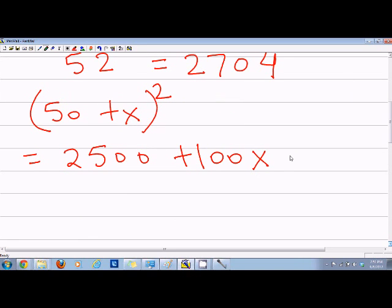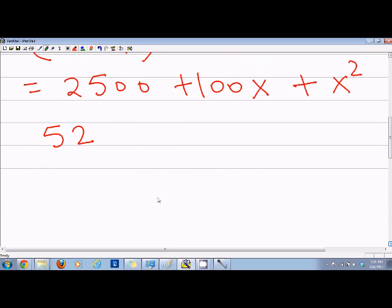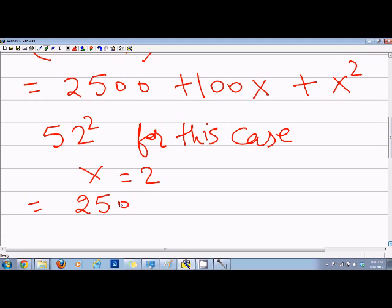and plus x square. So you can see that if I am taking a square of 52, then x in this case, for this case, x is equal to 2. And if x is equal to 2, then you can go back to the equation and say 2500 plus 2 into 100 plus 2 square.